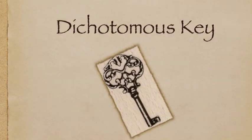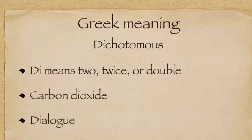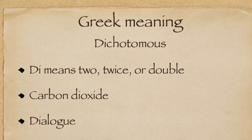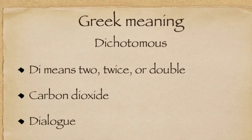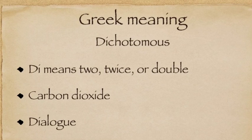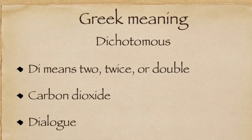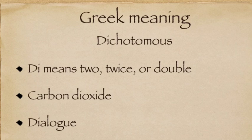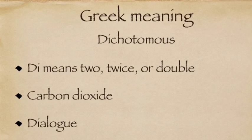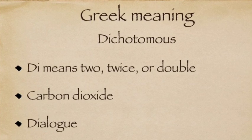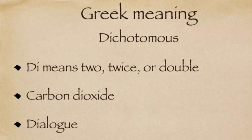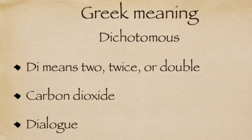What is a dichotomous key? Let's first look at the Greek prefix in the word dichotomous: 'di.' It means two, twice, or double. We see it used in the word 'dioxide,' as in carbon dioxide, which is a compound made of one carbon atom and two oxygen atoms. 'Dialogue' is another word with the prefix 'di' — it is a conversation between two people.